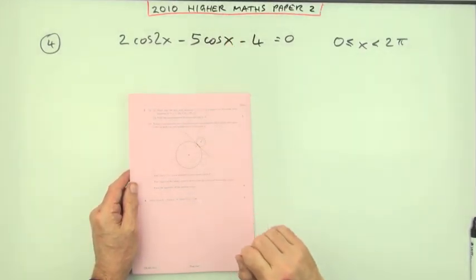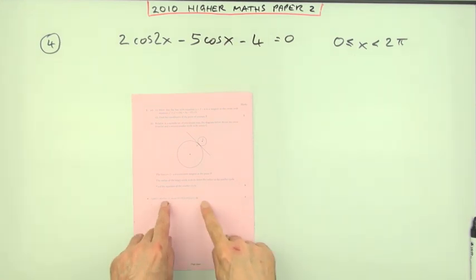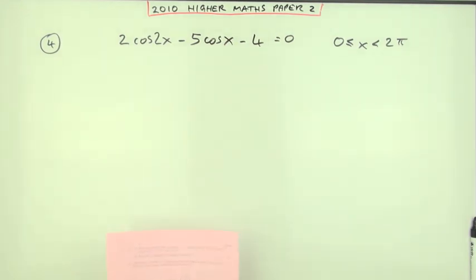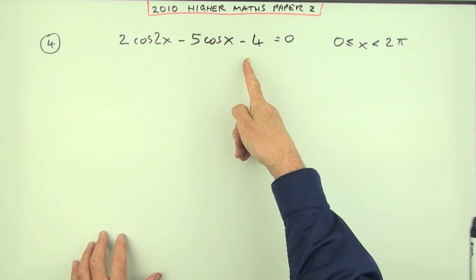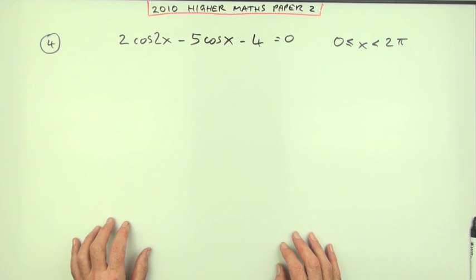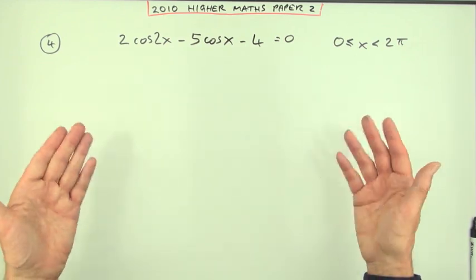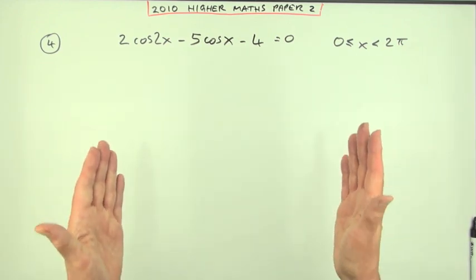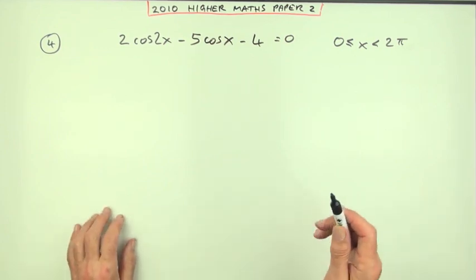Number four from the 2010 Higher Maths Paper 2, a little double angle equation for five marks. It's in radians, and really you shouldn't be scared just to set your calculator into radians and do your calculations in there. Change them into degrees if you wish, but remember to change them back into radians, or you'll lose that mark.